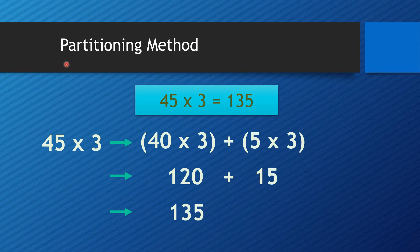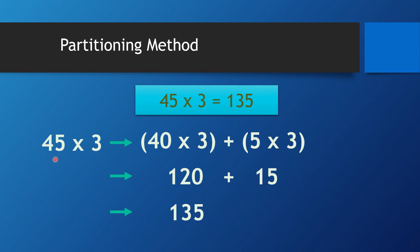Now this is the partitioning method. The question is forty-five times three. Don't look at the answers first. We look at the method and then we will check whether our answers are the same. In the partitioning method, what you are going to do is split forty-five — split means you make it separate: forty and five. If you add them together, it makes forty-five.